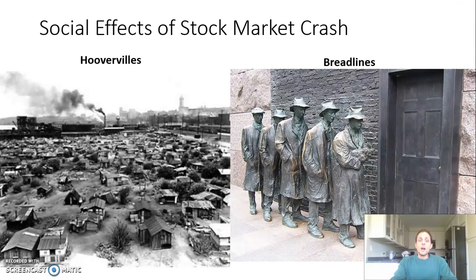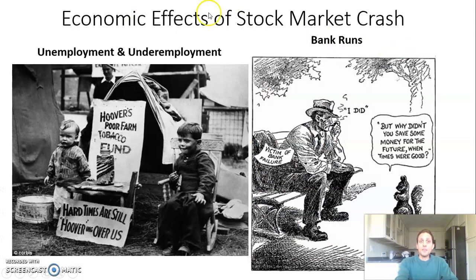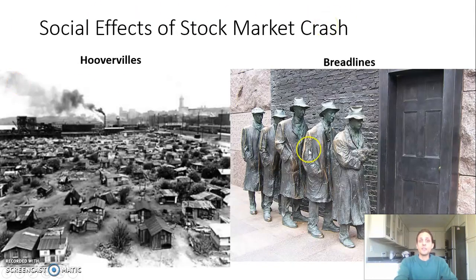There are also massive social effects. Since people are losing their jobs and savings, a lot of people become homeless, and you have makeshift shanty towns popping up all over big cities in the United States. They're nicknamed Hoovervilles after President Herbert Hoover. People are literally starving, lining up on bread lines for food and going to soup kitchens. The economic effects and social effects are intertwined, with widespread issues facing Americans across different classes during the Great Depression.